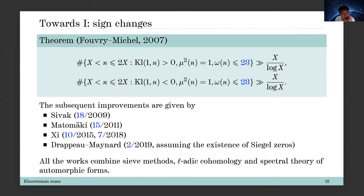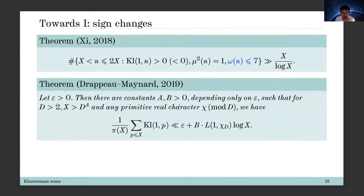It is natural to expect that one can reduce this constant further — for example to one or two or three. If you can reduce it to one you can capture prime moduli. There are subsequent improvements by Shparlinski, Munsch, and myself, and the current record is seven. Sathe, Tapu, and James Maynard showed that if one is allowed to assume the existence of Landau-Siegel zeros, the constant can be reduced further to two.